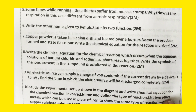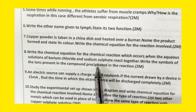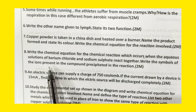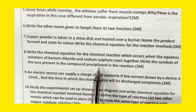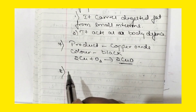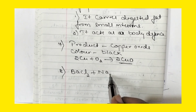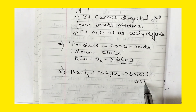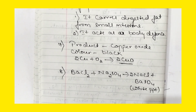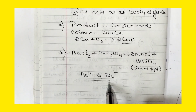Now question number 8: write the chemical equation for the reaction when aqueous solution of barium chloride and sodium sulfate react together, and write the symbol of the ions present in the precipitated compound. BaCl₂ + Na₂SO₄ → 2NaCl + BaSO₄. This BaSO₄ is a white precipitate. The ions present in BaSO₄ are Ba²⁺ and SO₄²⁻.